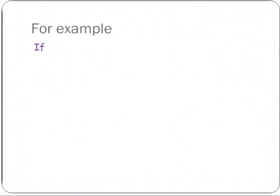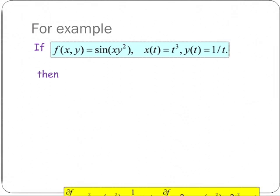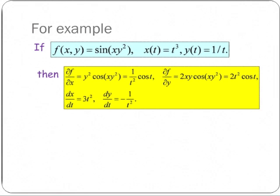For example, if f of x, y is sin(xy squared) and x and y vary with the parameter t — x of t is t cubed and y of t is 1 over t — then df dx is y squared cos(xy squared), which when we put x equal to t cubed and y equal to 1 over t comes out to (1 over t squared) cos t. And df dy is 2xy cos(xy squared), which with x equal to t cubed and y equal to 1 over t gives 2t squared cos t.